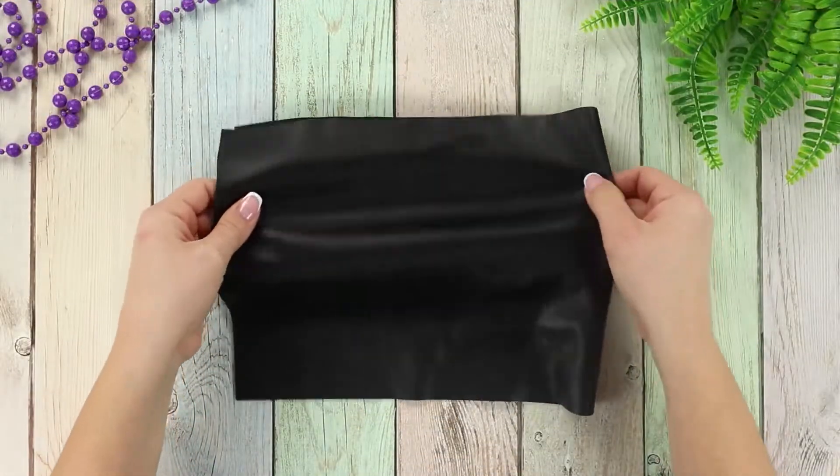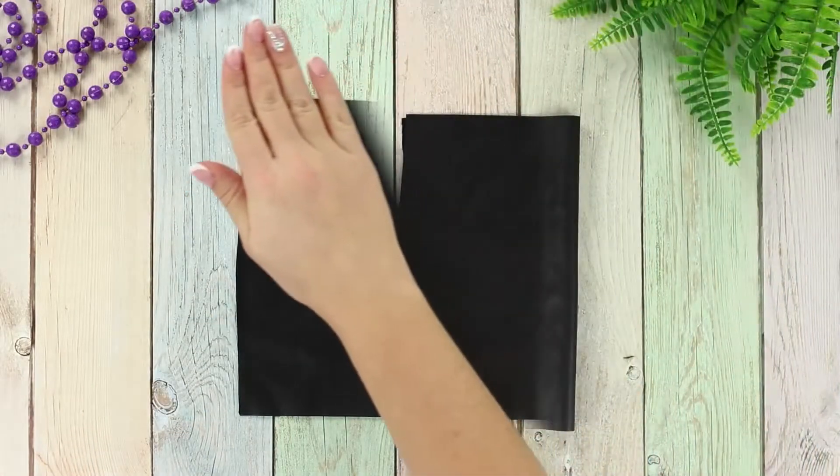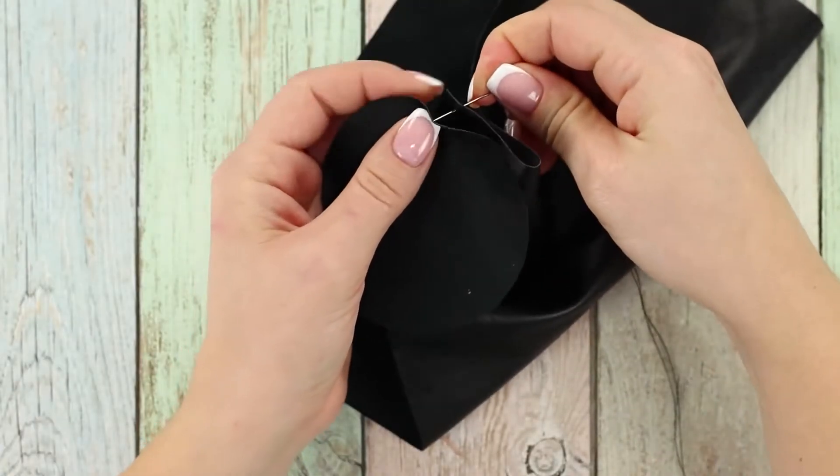And now you need a piece of black fabric or thin pleather. Cut out a circle and a rectangle out of the pleather. Sew a rectangular piece along the edge of the circle.